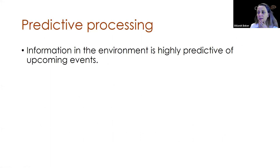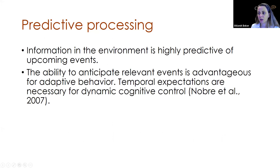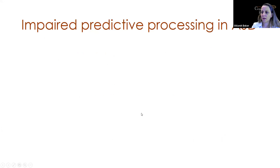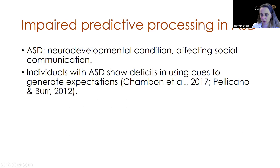Information in the environment is usually highly predictive of upcoming events, and the ability to anticipate relevant events is advantageous for adaptive behavior. Temporal expectations are necessary for dynamic cognitive control. In autism — a neurodevelopmental condition that affects social communication — individuals show deficits in using cues to generate expectations.